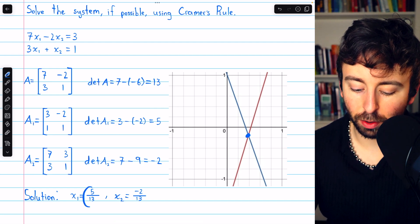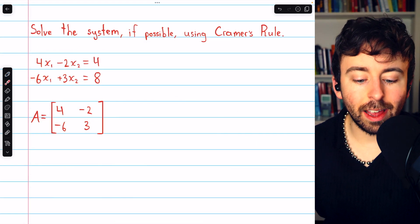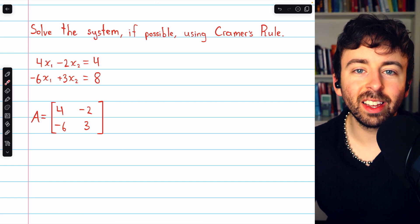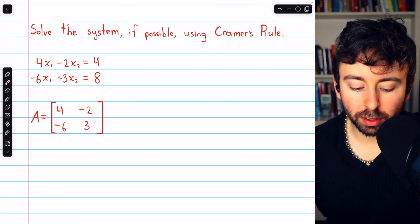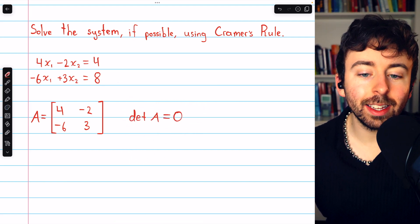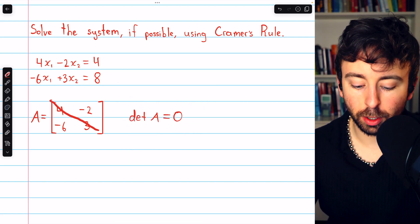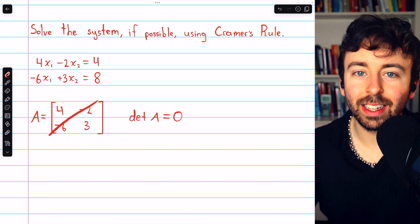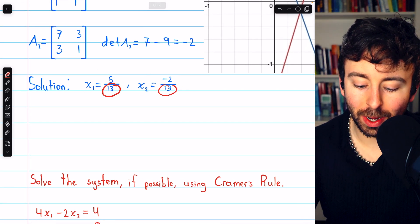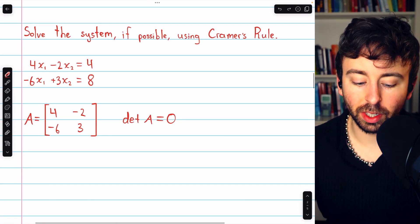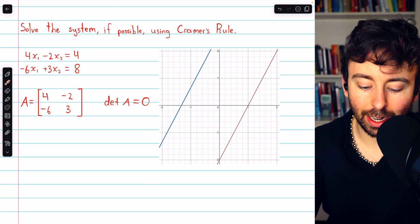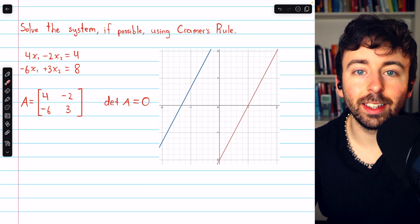That point is (5/13, -2/13). In this next example, we're again asked to solve the system if possible using Cramer's Rule — two equations and two unknowns. This one is not possible. We start by finding the determinant of A, and we find it is zero: four times three is twelve, minus twelve is zero. Hence all solutions we'd try to calculate would have zeros in the denominator, so there is no solution. If we graph the two lines, they are parallel and do not intersect, which is why the determinant of the coefficient matrix is zero.